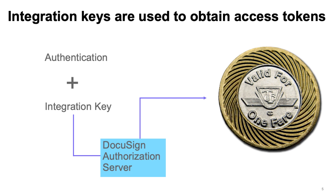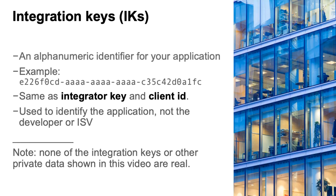We recommend that your application uses an OAuth flow and the DocuSign authentication server to obtain access tokens. By using OAuth, your application authenticates on behalf of your user without seeing the user's password. During the early stages of development, you can also hard code an access token, but that can only be a temporary step since access tokens only last a maximum of eight hours.